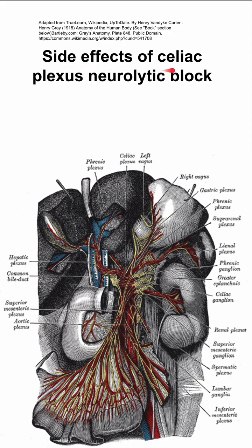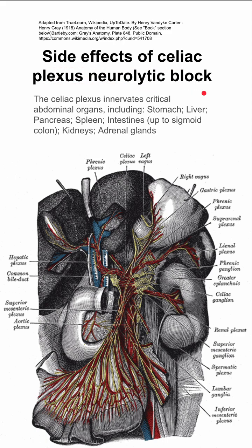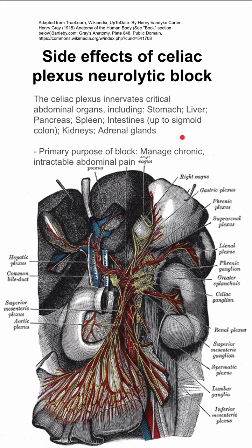These are side effects of the celiac plexus neurolytic block. The celiac plexus innervates critical abdominal organs including the stomach, liver, pancreas, spleen, your intestines up to the sigmoid colon, your kidneys, and your adrenal glands.